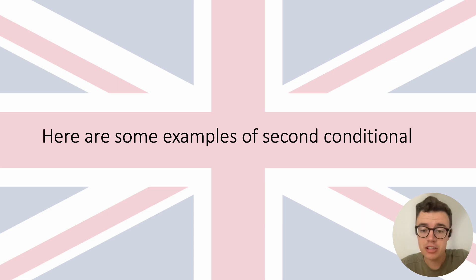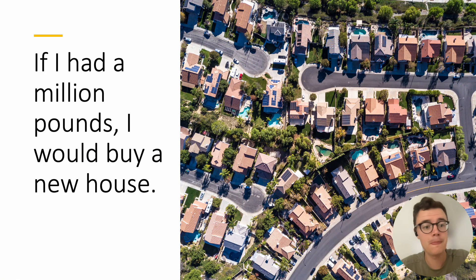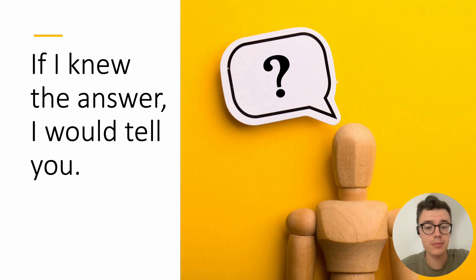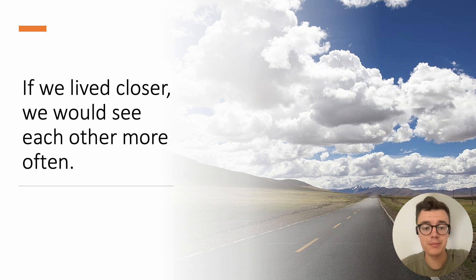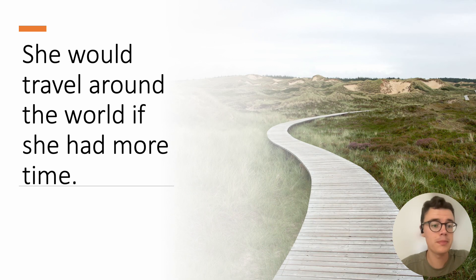Here are some examples of the Second Conditional. If I had a million pounds, I would buy a new house. If I knew the answer, I would tell you. If we lived closer, we would see each other more often. She would travel around the world if she had more time.